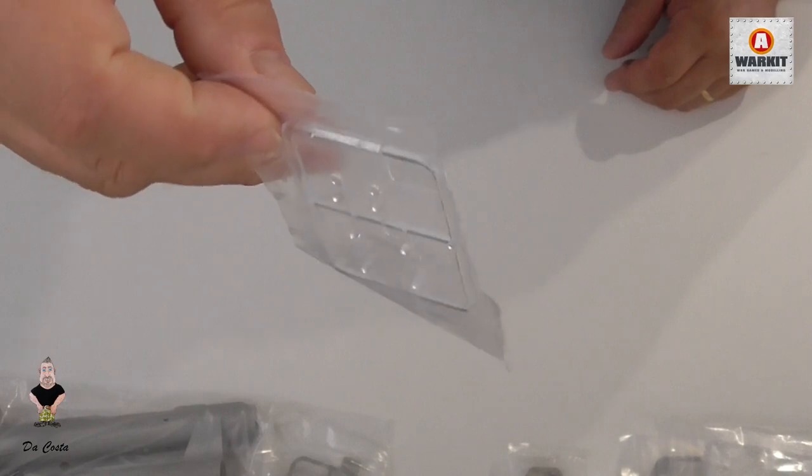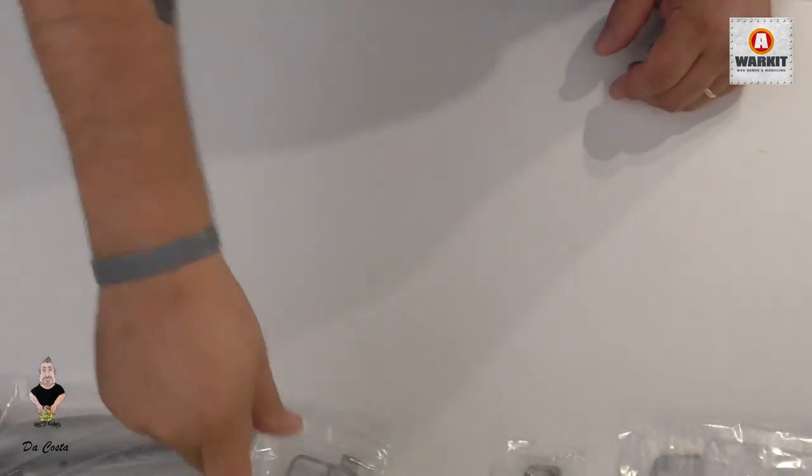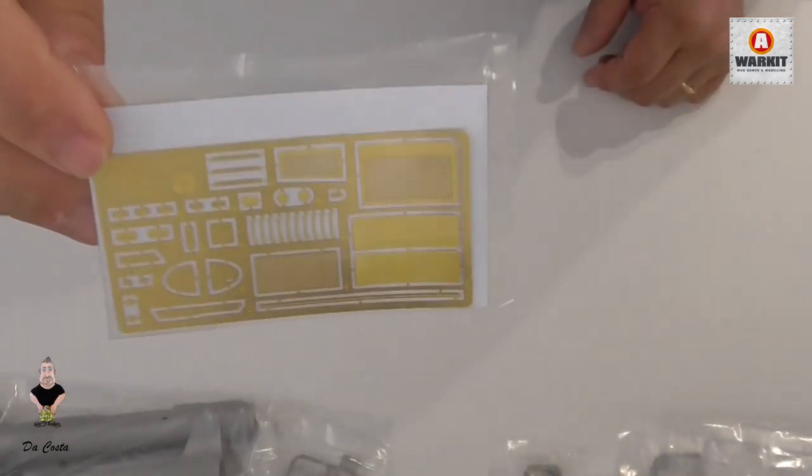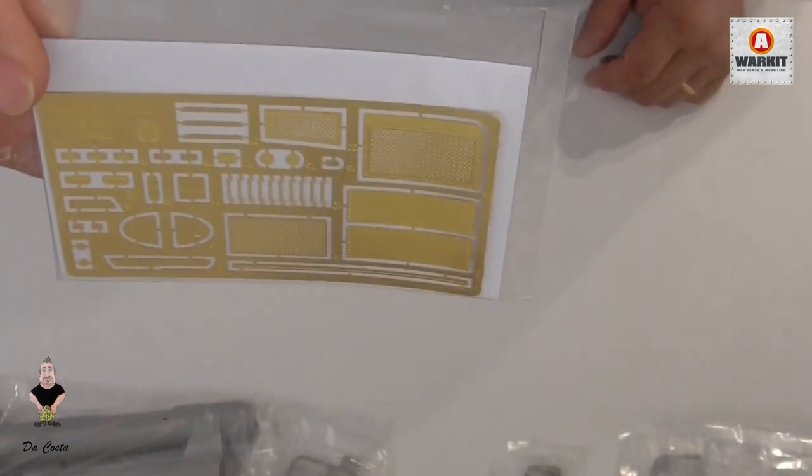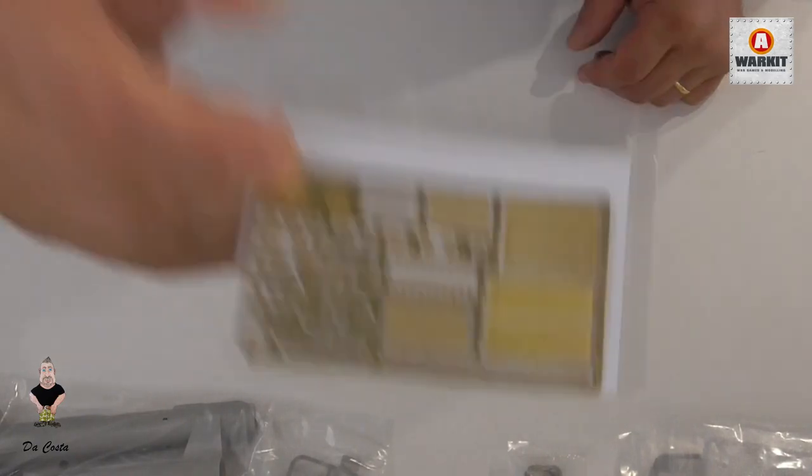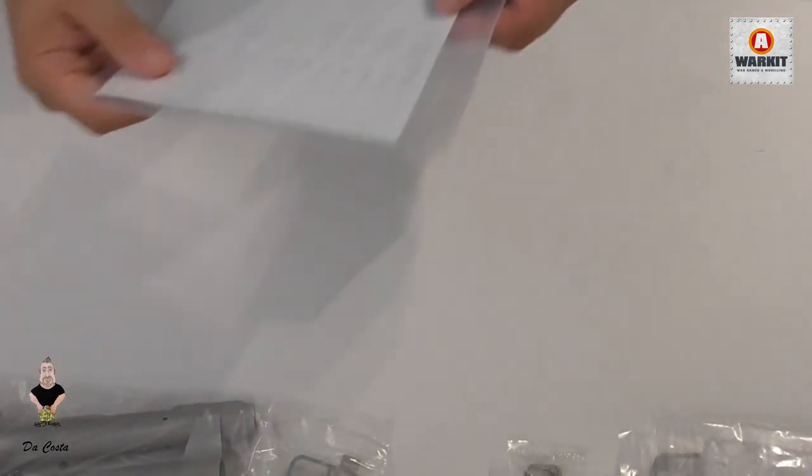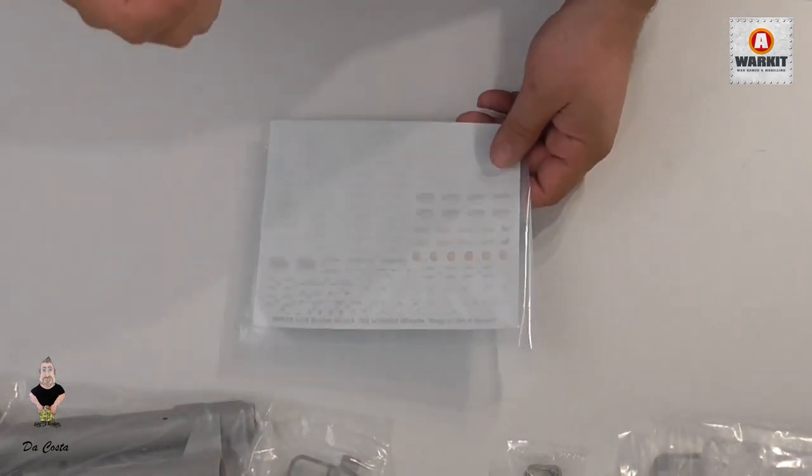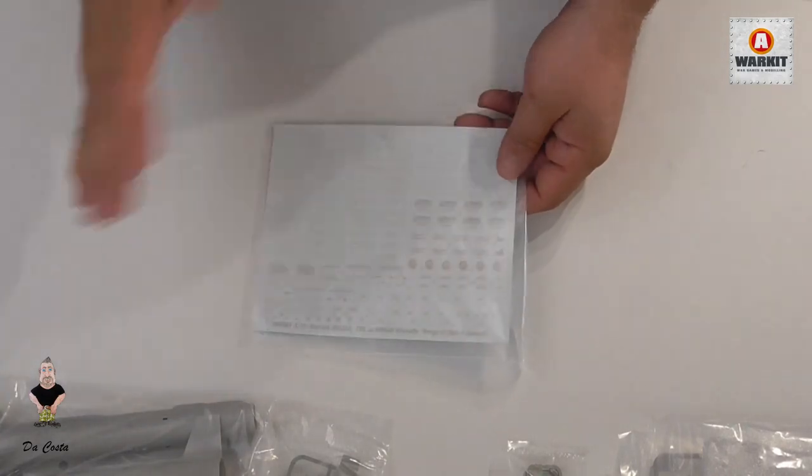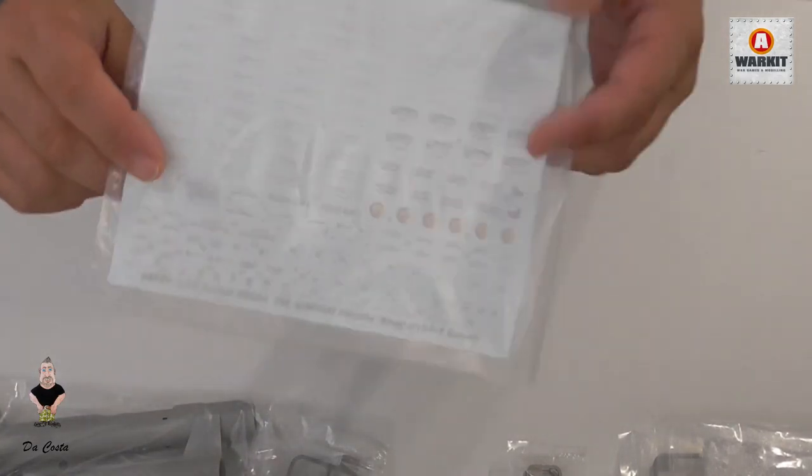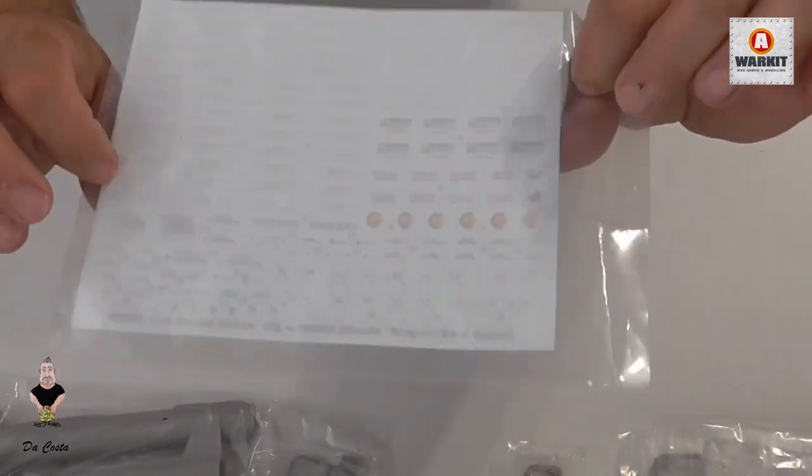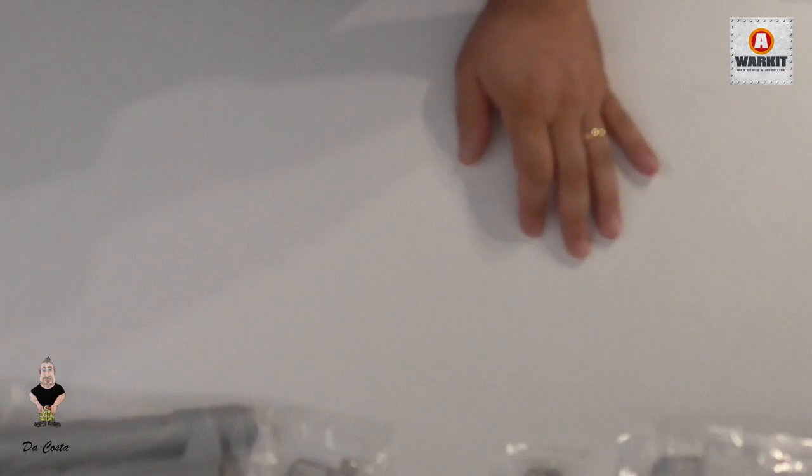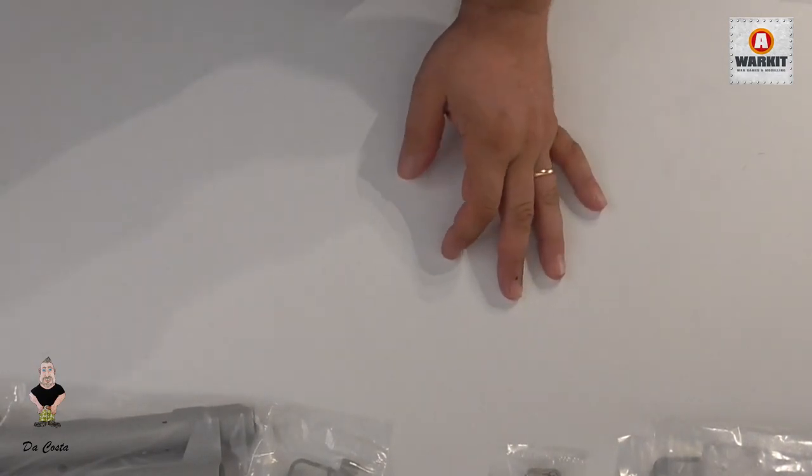This is going to be really awesome. We've got parts for the periscopes and headlights - the clear parts. Finally, we have the sheet of photo-etch parts. Trumpeter, I love your photo-etch. They are really good work and very nice to bend. They are strong, not weak. Lots of decals - you're going to put all of these on your tank.